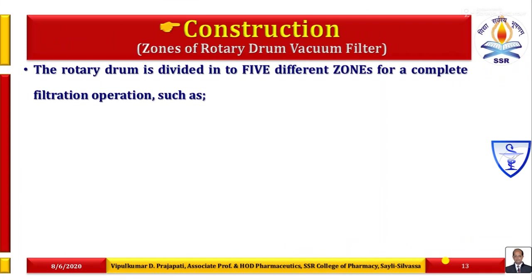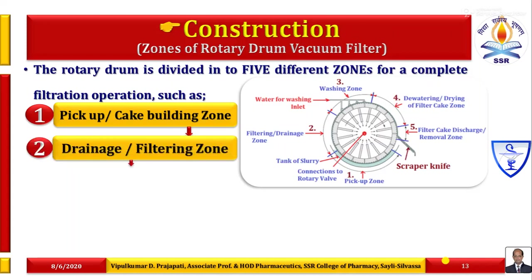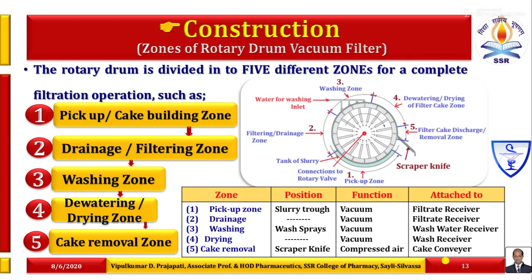The rotary drum filter is divided into five different zones for a complete filtration operation: the first zone is the pickup or cake building zone; the second is the drainage or filtering zone; the third is the washing zone; the fourth is the dewatering or drying zone; and the fifth is the cake removal zone. All five zones have different positions and functions and are attached to ancillary equipment.